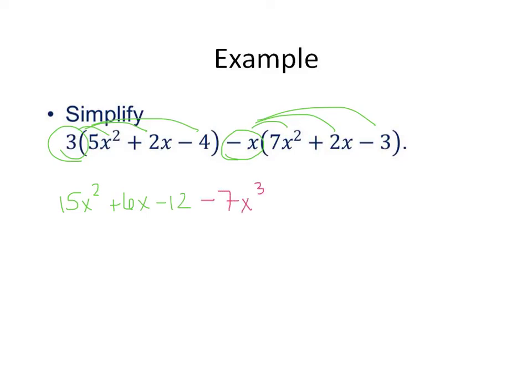Minus 7x cubed. Make sure you see where that came from. Minus 2x squared plus 3x. Make sure you know where all of those signs came from.